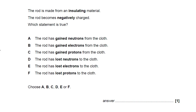The answer must be B. The rod has gained electrons. It hasn't gained neutrons — neutrons are neutral so it can't possibly be that. The rod has gained protons? Well, protons are in the nucleus, they don't move, and if it gained protons it would be positive. Lost neutrons? Neutrons are neutral, they don't move, so it can't be that one. The rod has lost electrons? If it's lost electrons it would overall be positive, so it can't be that one. The rod has lost protons? Again, protons don't move.